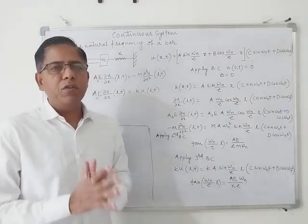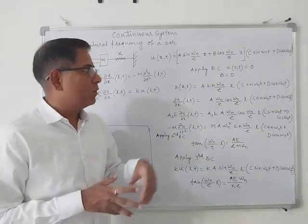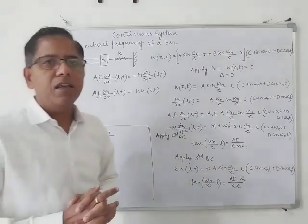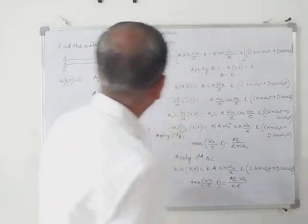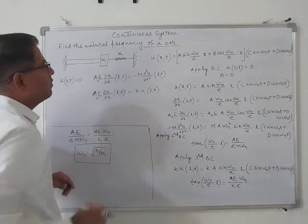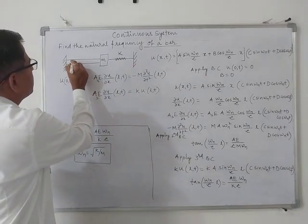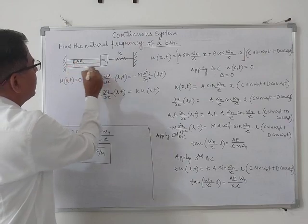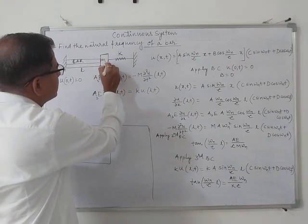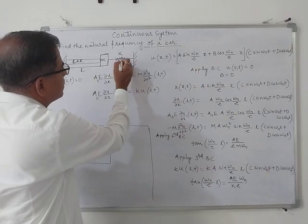Hello students, continuing with our discussion on continuous system longitudinal vibration. Today we will see one more variety in the longitudinal vibrations. Here, find the natural frequency of a bar for a longitudinal vibration. You can see this is a bar having length L, and at the end of the bar a mass is attached.